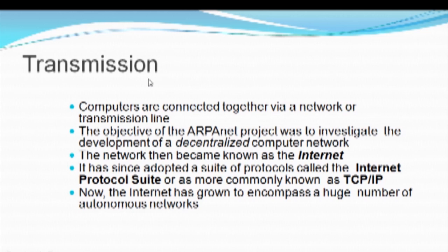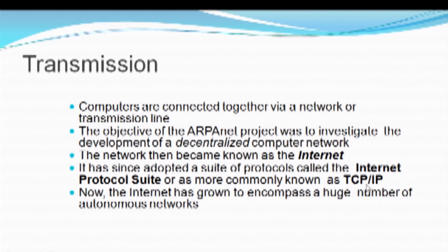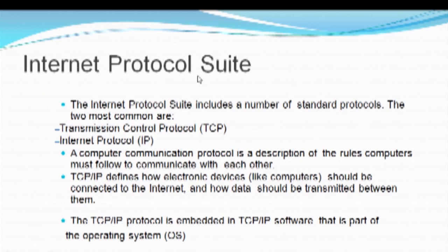The next concept we are moving to is transmission - how transmission is done across the Internet, meaning how computers actually share resources or share files from one end to another. Computers are connected together via one network, or you can say a transmission line. The main objective of the ARPANET project was to investigate the development of a decentralized computer network. The network then became known as the Internet - a group of networks. As discussed earlier, ARPANET was the first network using the TCP/IP protocol suite. Let's move on to your IP suite, that is your Internet Protocol suite.